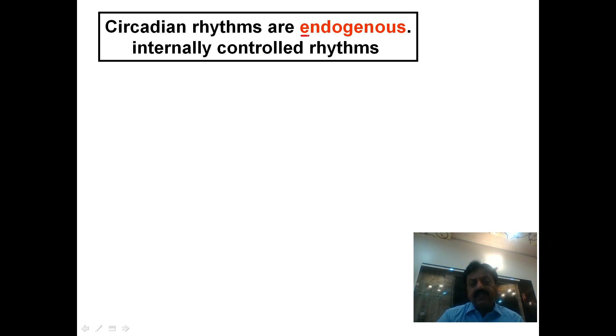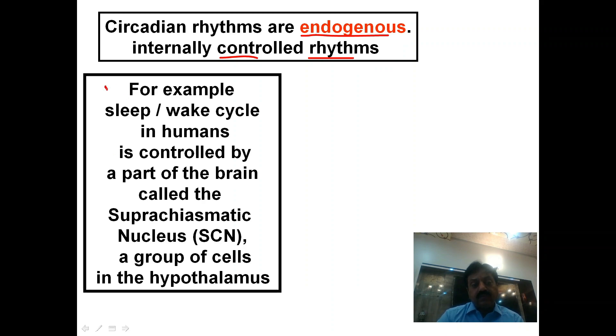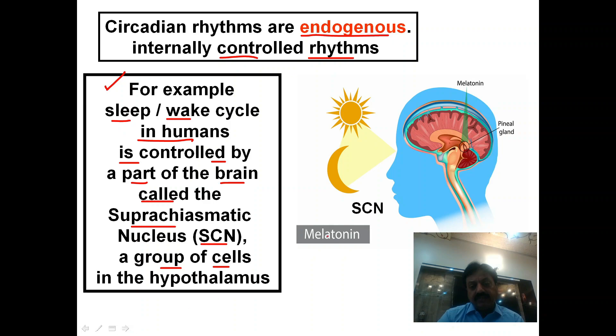Circadian rhythms are endogenous, internally controlled rhythms. For example, the sleep and wake cycle in humans is controlled by a part of the brain called the suprachiasmatic nucleus, a group of cells in the hypothalamus. This is the internal clock inside the body.